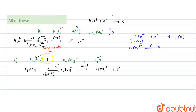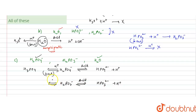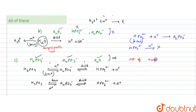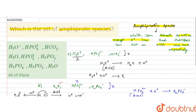Now checking H₂PO₃⁻: when it releases H⁺, it forms HPO₃²⁻, so it can act as an acid. When it gains H⁺, it forms H₃PO₃, so it can act as a base. All three species in option C are amphiprotic, making this the correct set of amphiprotic species. The answer is option C.